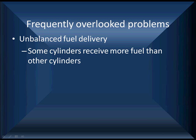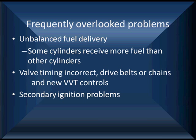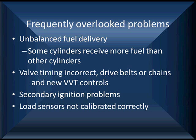One frequently overlooked problem is unbalanced fuel delivery, where some cylinders receive more fuel than others. Valve timing being incorrect is another — on older vehicles with drive belts, and on newer vehicles with VVT controls. Because of poor oil changes, many VVT controls are not functioning as they should, causing unusual problems. General secondary ignition problems occur in high-mileage vehicles — well over 100,000 miles — where ignition breakdown occurs under stress. And sometimes sneaky problems like a dirty mass airflow sensor not calibrated correctly. We can have all of these on one vehicle.